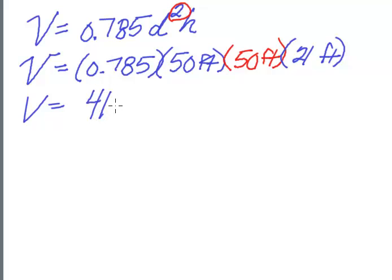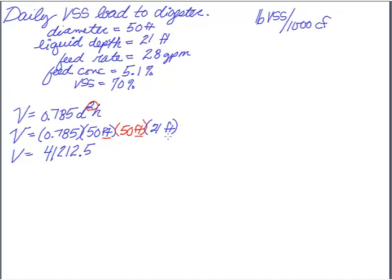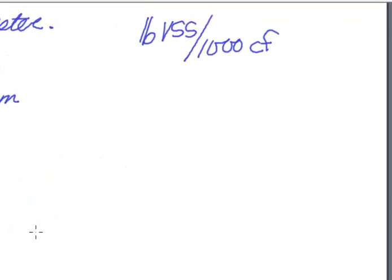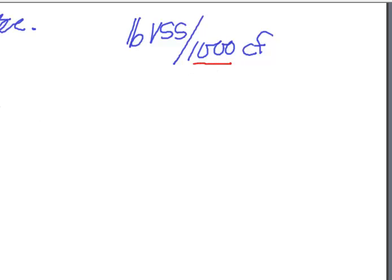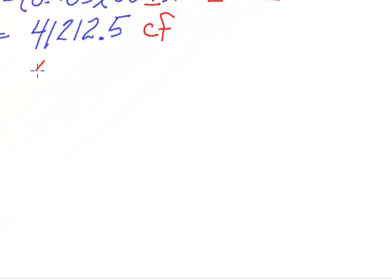And I get the same number both times, and it is 41,212.5. And then because I have feet times feet times feet, this is going to be in cubic feet. And depending on what they gave me my answers in, in an exam, or what I was trying to compare it against, I might want per thousand cubic feet instead of by cubic feet. In which case, we would just divide this by a thousand, and I would end up with 41.2125.